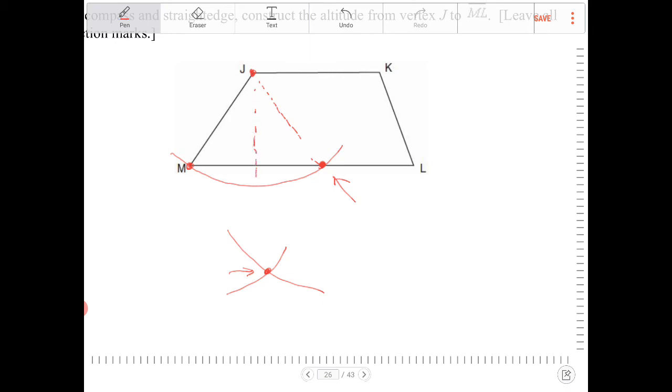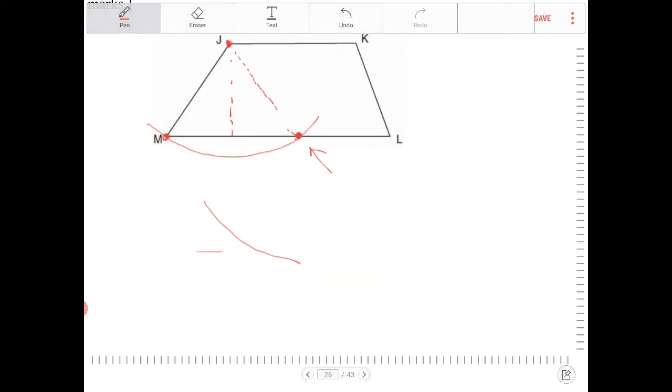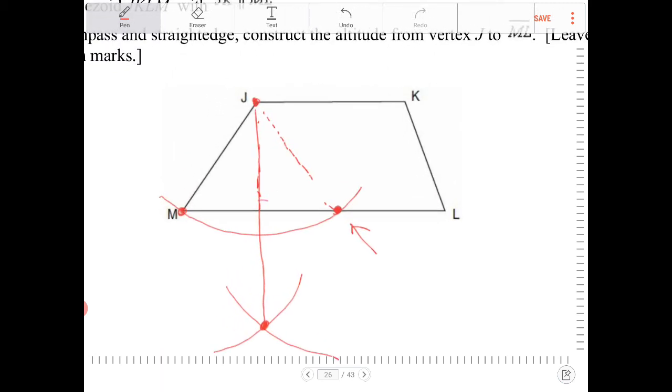And then you're going to take your straight edge, and you're going to draw yourself a line connecting the two points of intersections there. And this is going to be your altitude.